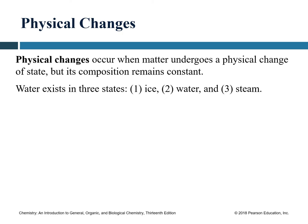A physical change occurs when matter undergoes a change of state but its composition remains the same. If we are only changing the physical property of a substance and the identity remains the same, that is a physical change. For instance, water can exist as ice, liquid water, or steam — these are all physical changes. Whether it is ice, liquid, or steam, the chemical composition is still H₂O.